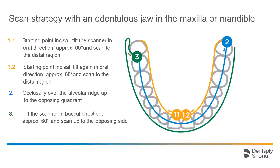Finally, we tilt the scanner by approximately 60 degrees in buccal direction and scan again up to the end of the opposing quadrant. Next, you will see a short video sequence regarding this procedure using the upper jaw.